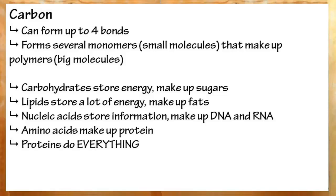The four types of carbon monomers that you'll need to know for biology are carbohydrates, which make up sugars, these store a little bit of energy. Lipids, which make up fats, which store a lot of energy. Amino acids, which make up proteins, which do pretty much everything. And nucleic acids, which make up DNA and RNA and store information.